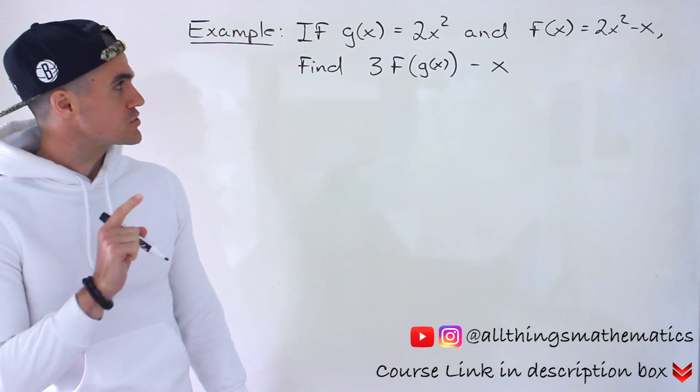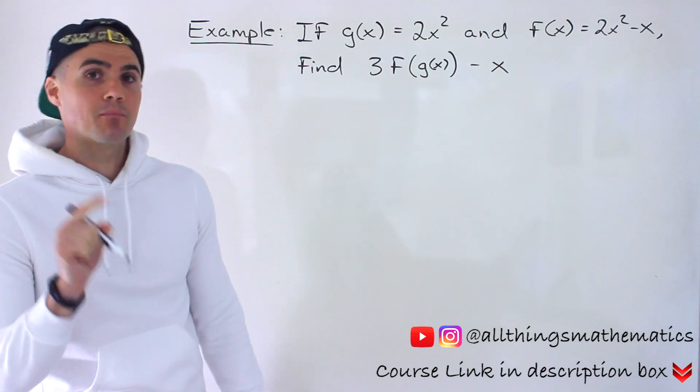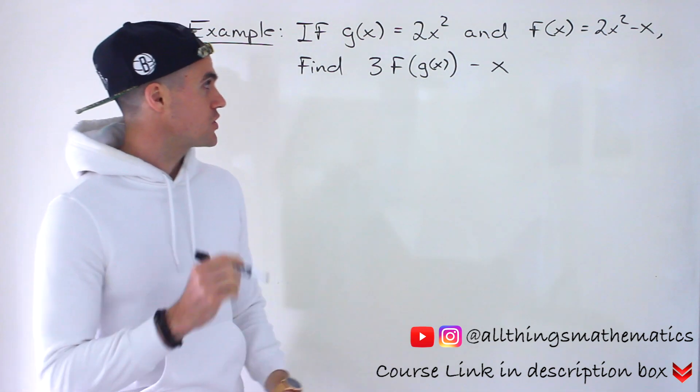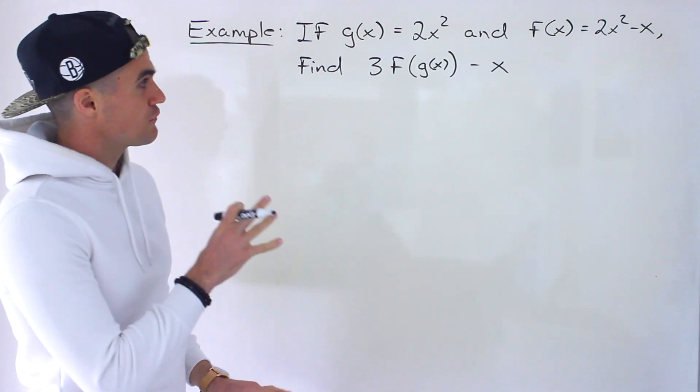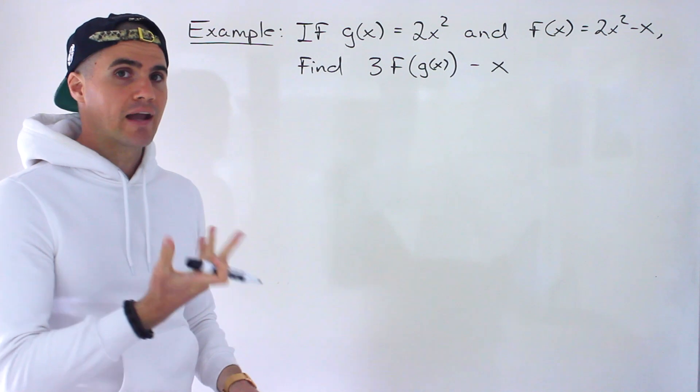So if we're told g of x equals 2x squared and f of x is 2x squared minus x, we have to find this expression: 3 times f of g of x minus x.